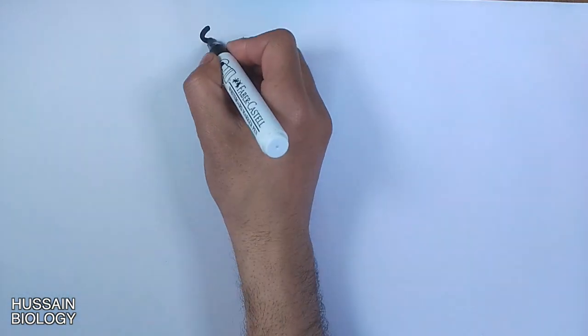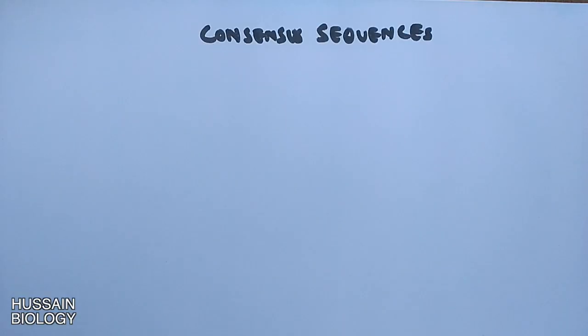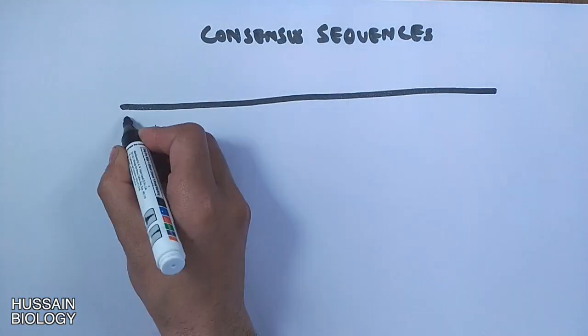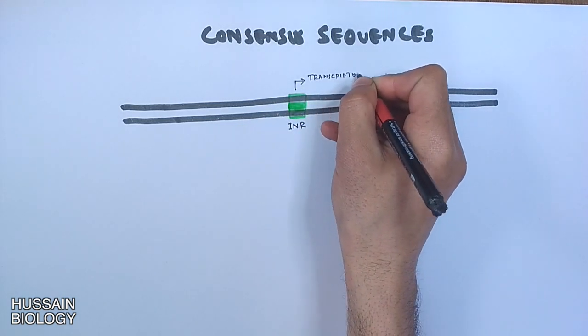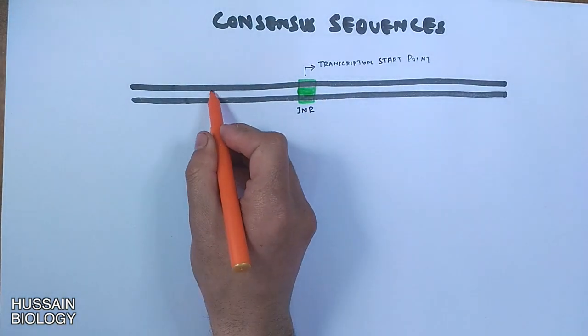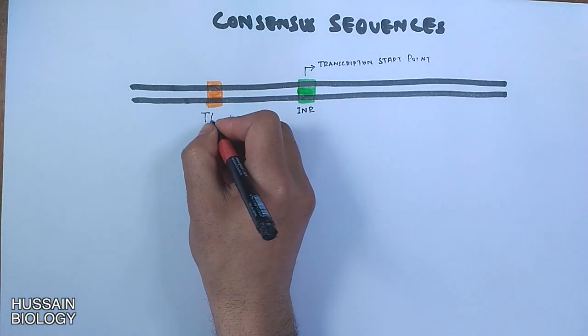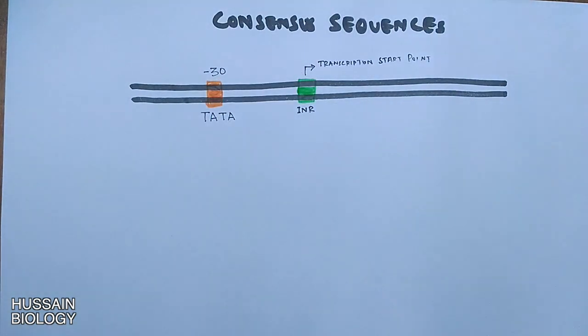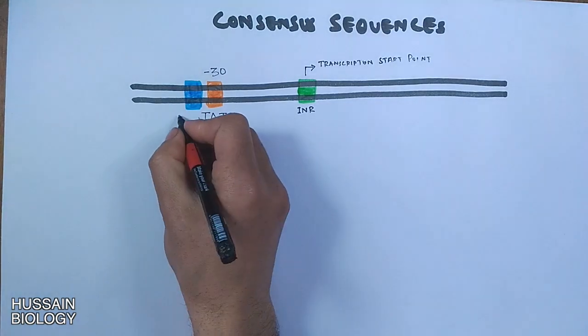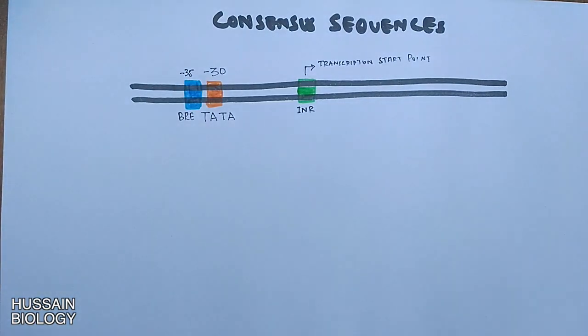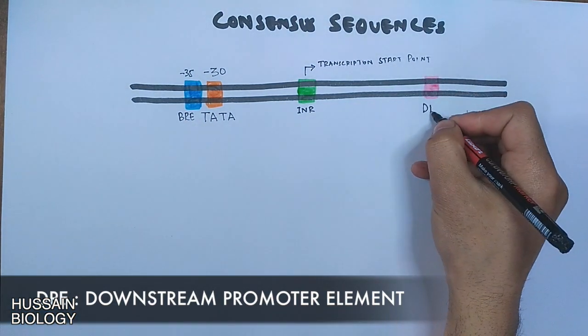Now let's have a look at some consensus sequences. First of all we have transcription start point INR sequence, which is termed as plus 1 position. Then we have TATA box sequence at minus 30 position, BRE sequence at minus 35 position, and DPE sequence at plus 30 position.